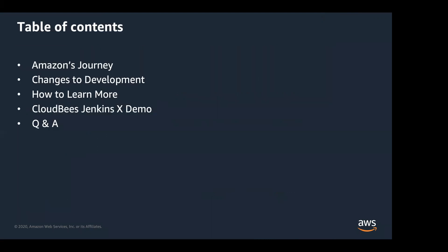So James, you want to kick us off? Today I want to cover: Amazon's journey going from monolith to microservices to deliver faster, innovate quicker, and gain speed. I also want to talk about some changes in development we had to make to meet those initiatives. Then I'll provide resources if you want to learn more, and we'll cover a CloudBees Jenkins X demo that Victor will do. We'll also have time for Q&A, so please feel free to put questions in the chat.